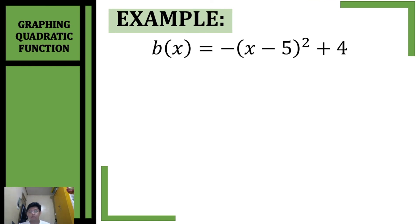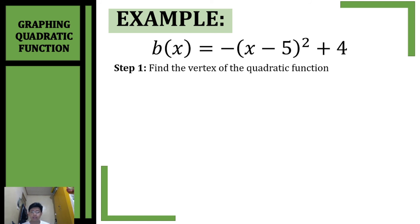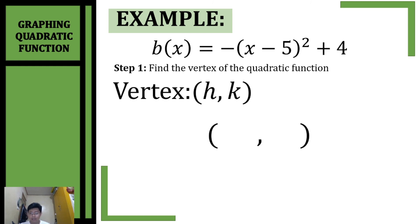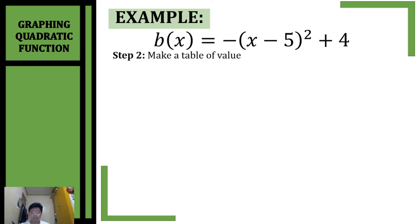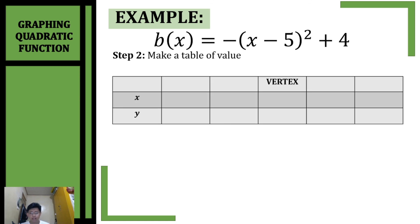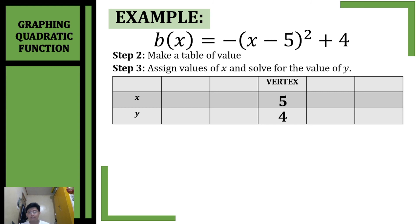Let's proceed to our last example. We're going to graph this quadratic function. First step: find the vertex. Since this is written in vertex form, we get our vertex by changing the sign of negative 5, giving us our x-coordinate of 5, and then copying positive 4 as our y-coordinate. Our vertex is (5, 4). Now proceed to step 2: make a table of values, placing our vertex at the middle — 5, 4. Step 3: assign values of x closer to the x-coordinate — we have 6, 7 on one side and 4, 3 on the other.